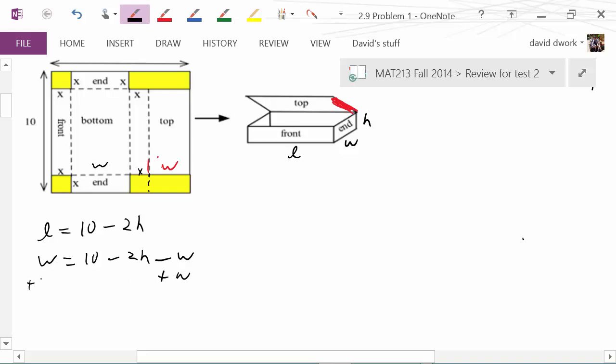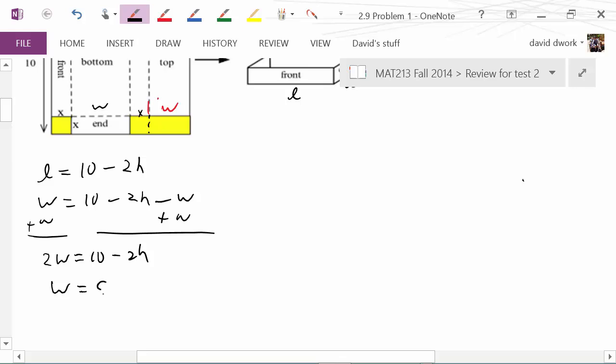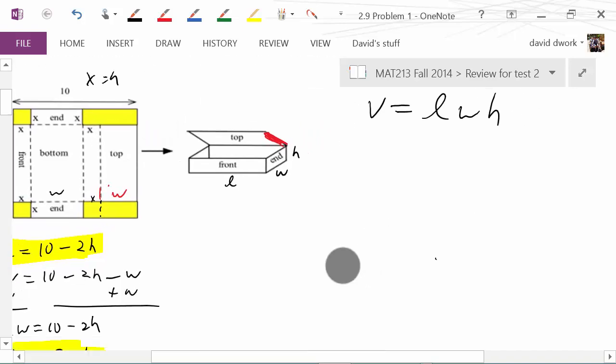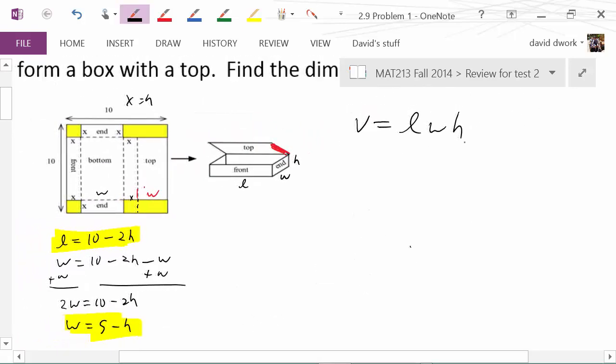Now we're super close. I don't want w on both sides of the equation, so if I add a w to both sides, that'll give me 2w equals 10 minus 2h. So therefore w equals 5 minus h. Now I have two equations I can work with here: w equals 5 minus h and I have length equals 10 minus 2h.